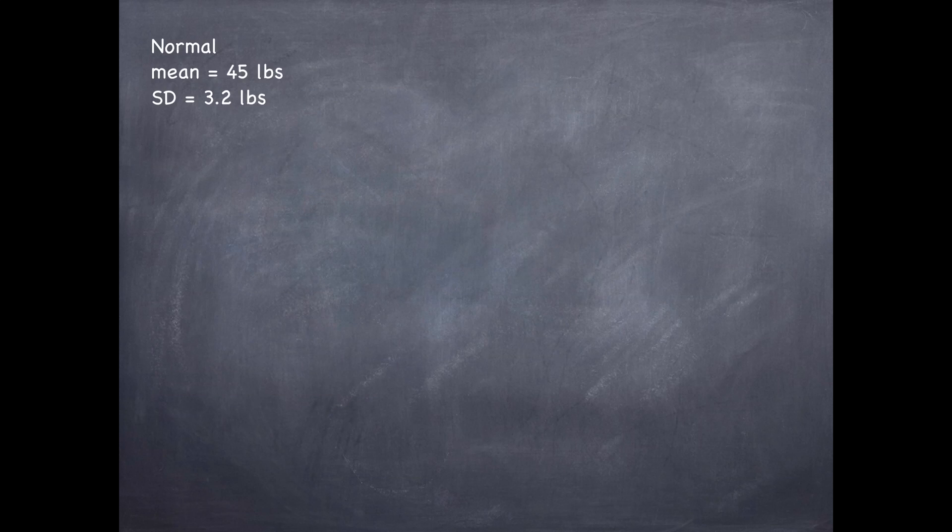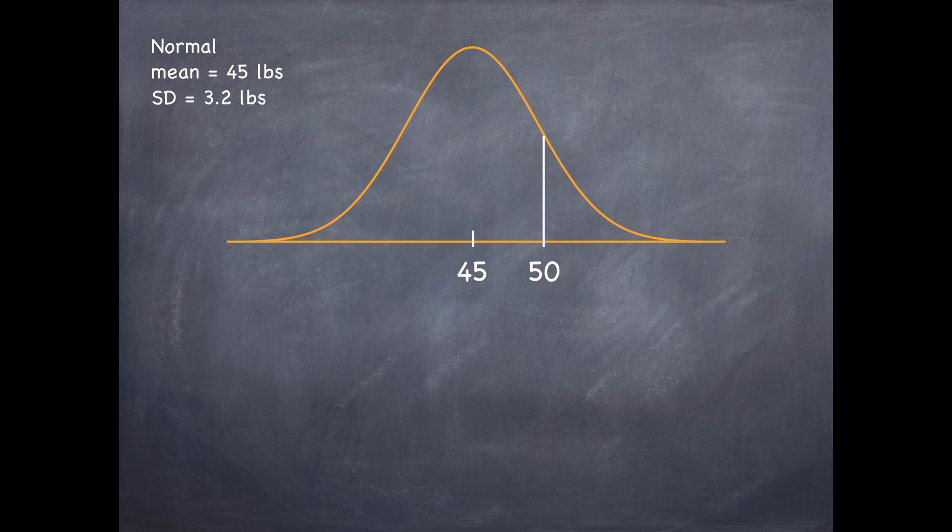So we know that the distribution is normal. We're given a mean and standard deviation. Let's start by drawing our curve. That should always be the first step. Then mark our mean and the observation that we're interested in.